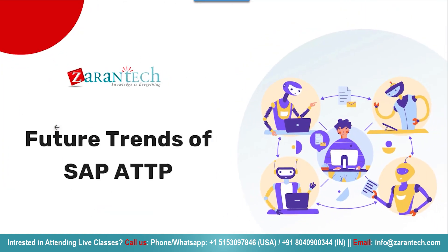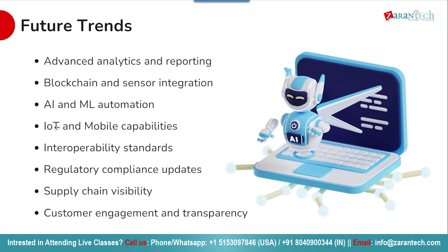Now that we have covered what SAP ATTP is today, let us look ahead at some key future trends that SAP is investing in to evolve the solution. Advanced analytics and reporting is a key theme, with machine learning enhancements delivering predictive insights to further optimize supply chain performance. SAP is also exploring blockchain ledger integration for greater security and immutability of track and trace data. Expect more IoT integrations with sensors for real-time tracking of shipments, location, and conditions. Mobility is another focus, with apps for verifying sellable returns and enabling field sales to check product authenticity. Ongoing regulatory updates will maintain compliance with new requirements such as US DSCSA Sellable Returns Verification Mandate. Finally, SAP ATTP will evolve to support more use cases around direct patient engagement and transparency.